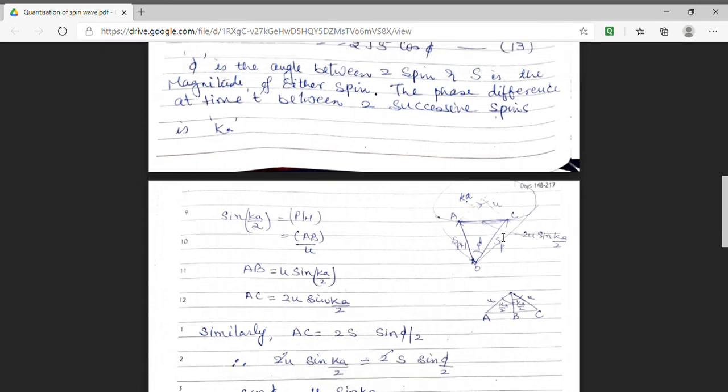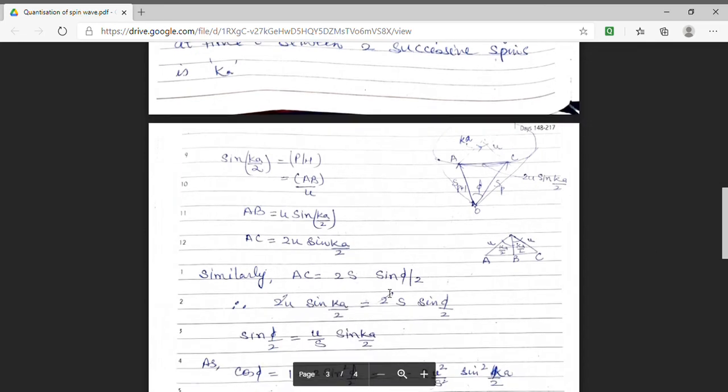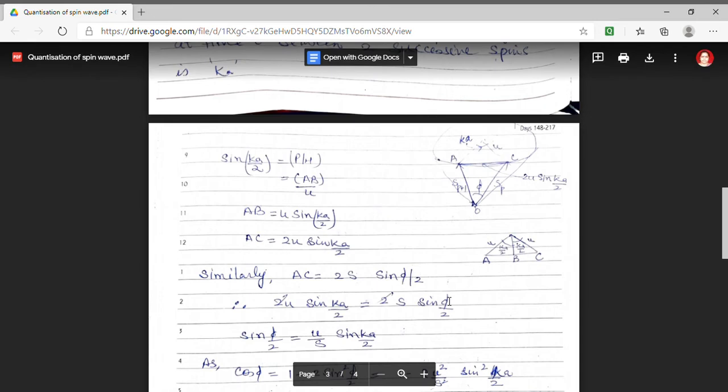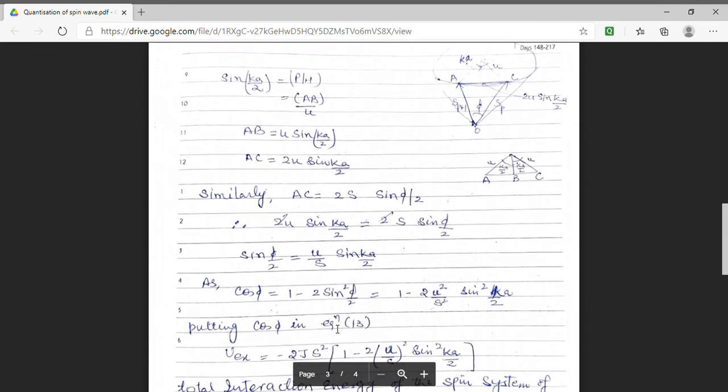Similarly, from the triangle AOC, we can have a value similar as minus 2s sin phi by 2. So equating them, I can get the value of angle phi. From these two expressions, I get my sin phi by 2 to be equal to u by s sin Ka by 2.